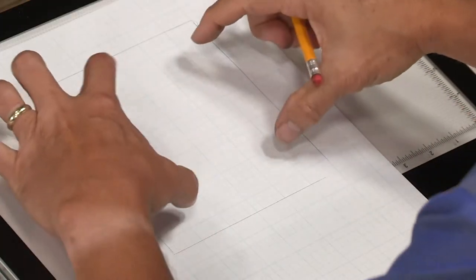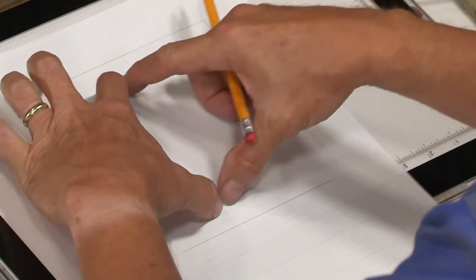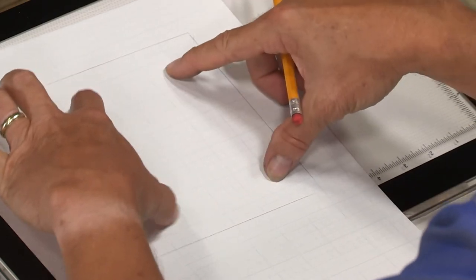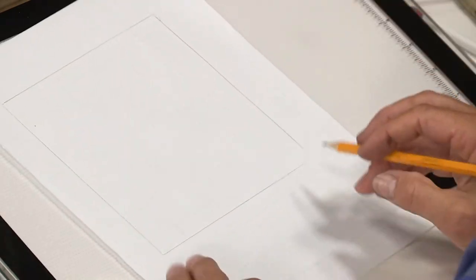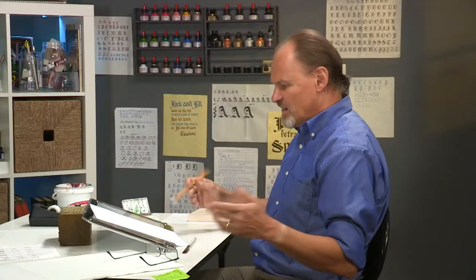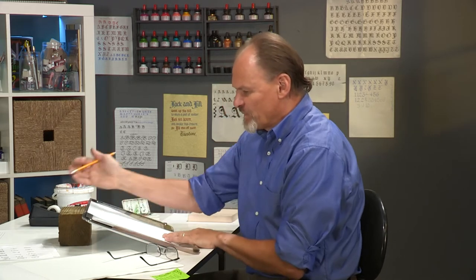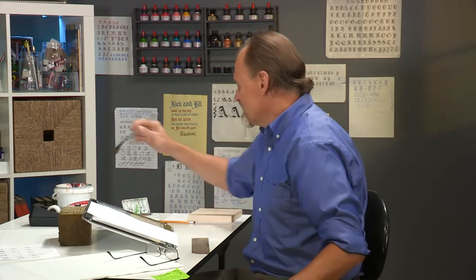This is ordinary graph paper that you can get at any office supply store. There's nothing fancy about it at all, but simply because it has lines going both ways, it provides a really good way to do Gothic lettering. Now, this letter is going to be large. We haven't done anything nearly this large up to this point. I want it to be about three or four inches tall and almost that wide.